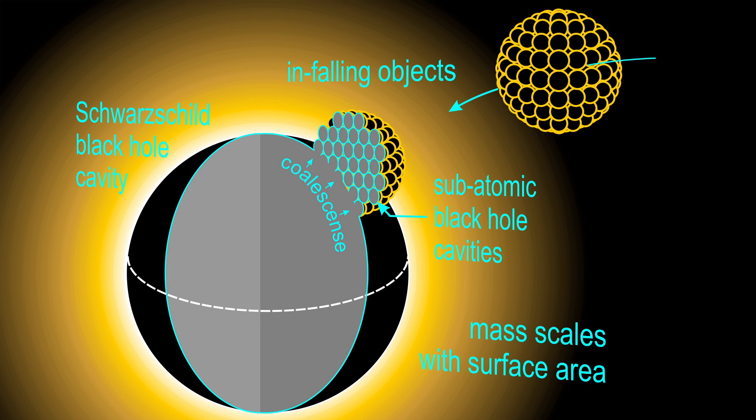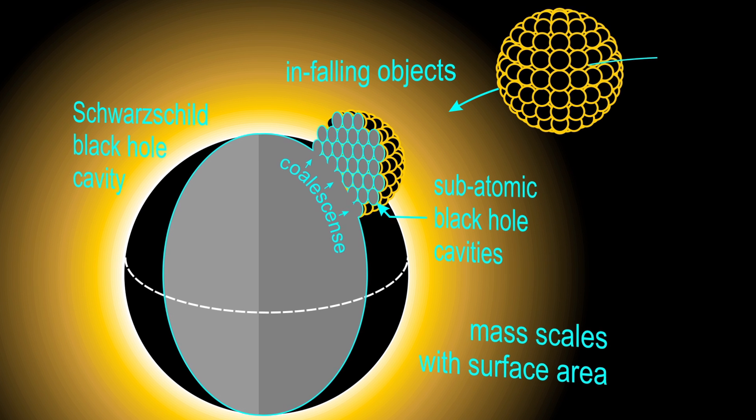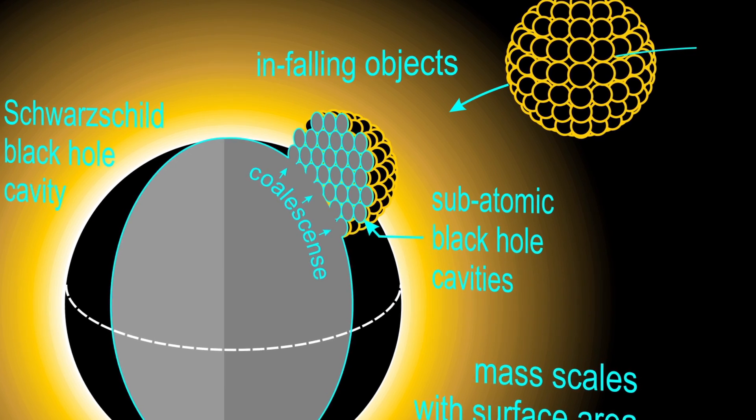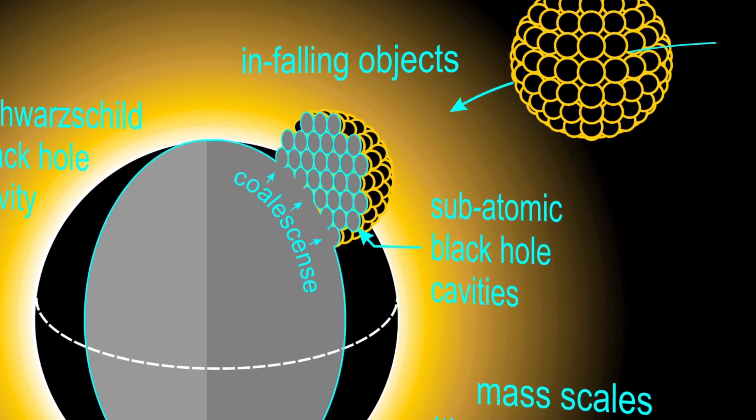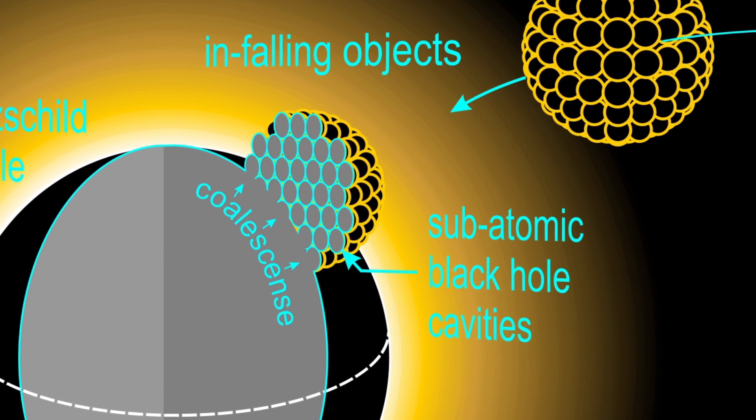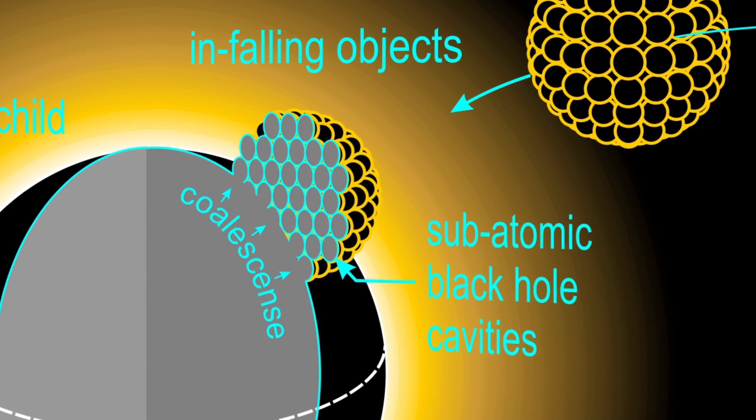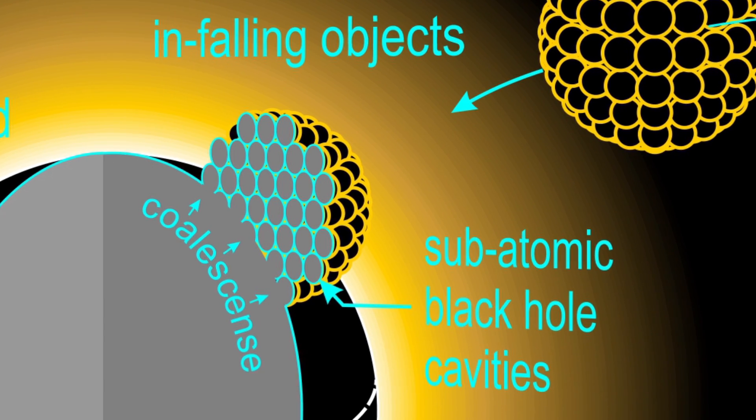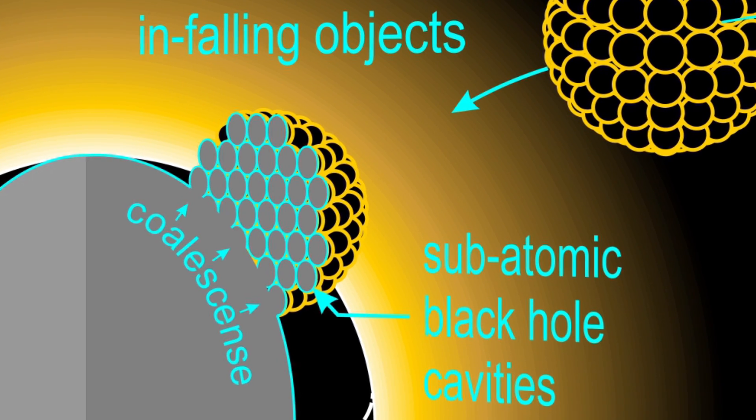If the black hole is, literally, a cavity in space, all there is to it is its surface. It has no enclosed volume and nowhere for the mass of in-falling objects to end up except as part of the surface. If the in-falling objects are themselves built out of black holes, as proposed here, the whole process of the growth of the large hole comes down to the simple act of coalescing bubbles, each tiny cavity adding mass to the total in proportion to its own surface area. The growth of the large black hole's mass would then naturally scale with its surface area.